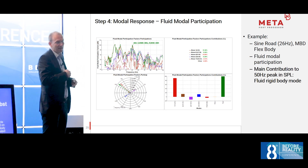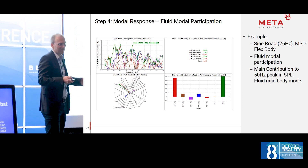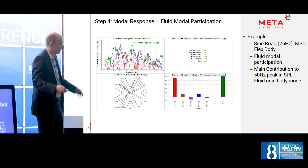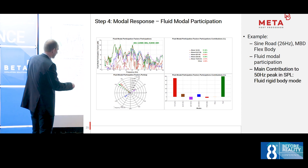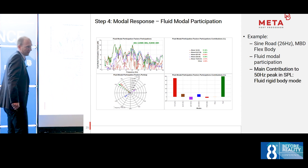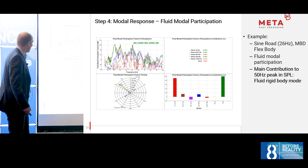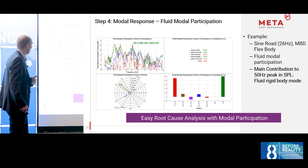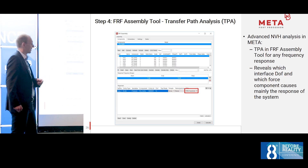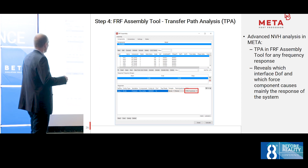We can also do fluid mode participation. Looking at the 50 Hz peak for the 26 Hz road — which is a higher harmonic — you might think it's the first fluid cavity mode, but looking at the graph you can see the first fluid mode is at 22 Hz. The 50 Hz peak is not a cavity mode resonance. This gives you easy insight into what is going on. Another impressive tool is the transfer path analysis.